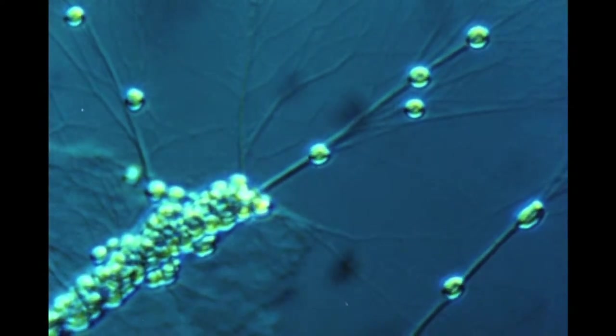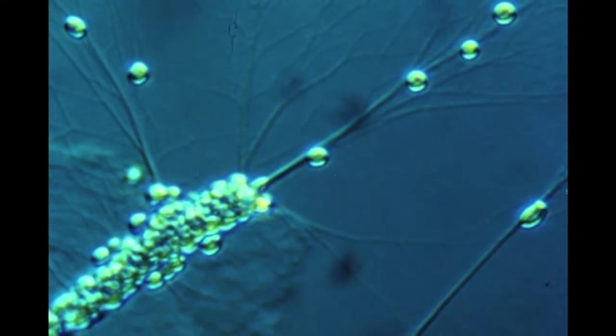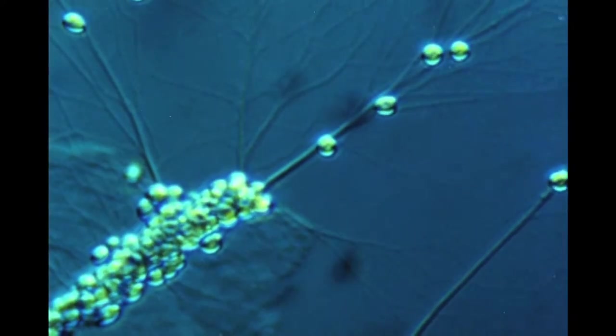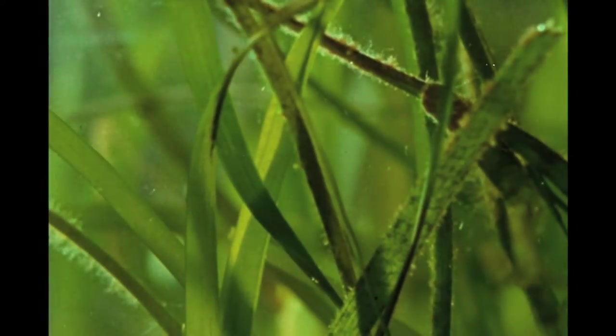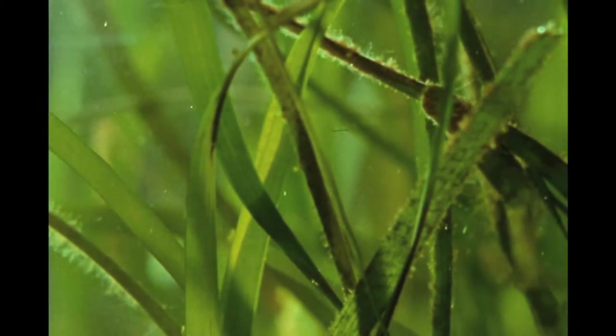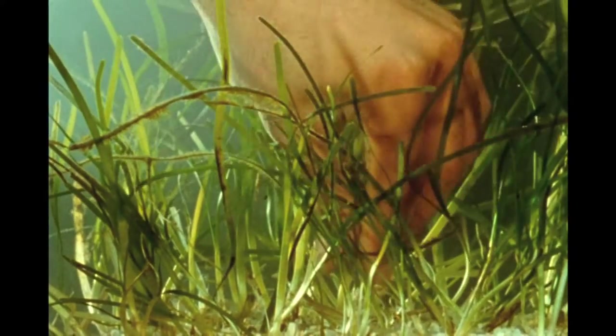Labyrinthula is a common marine microorganism found along the seashore associated with various seaweeds or marine grasses, such as eelgrass, zoster, or marina, from which cultures may be isolated.